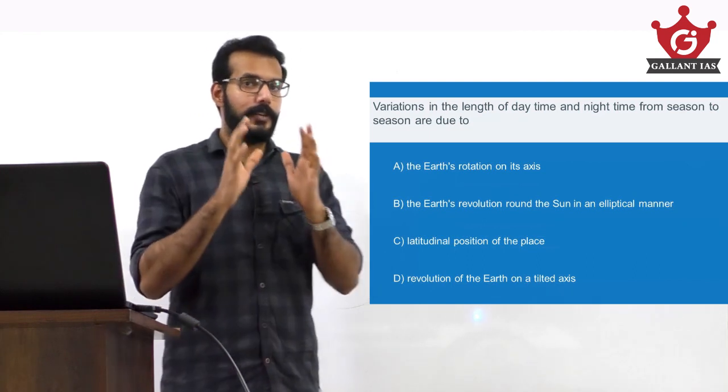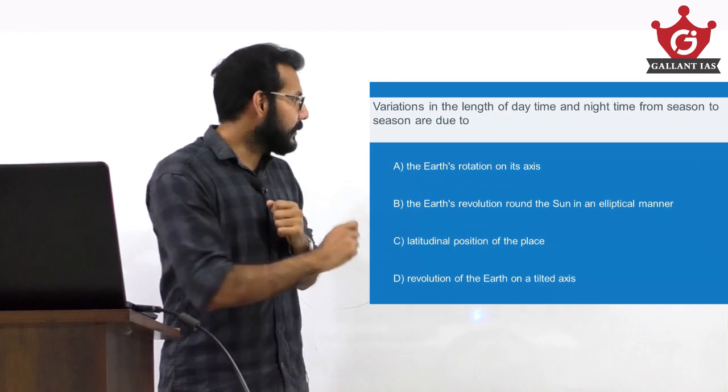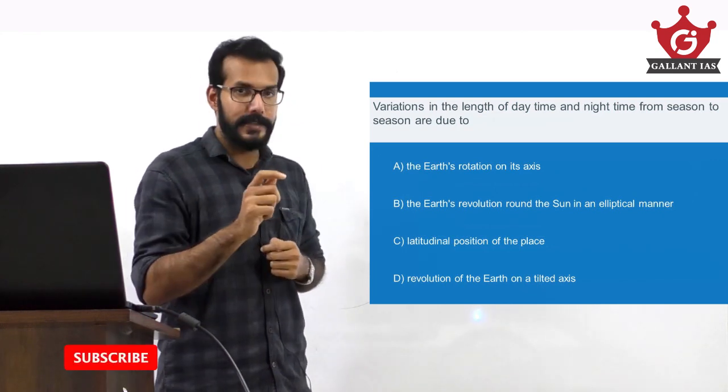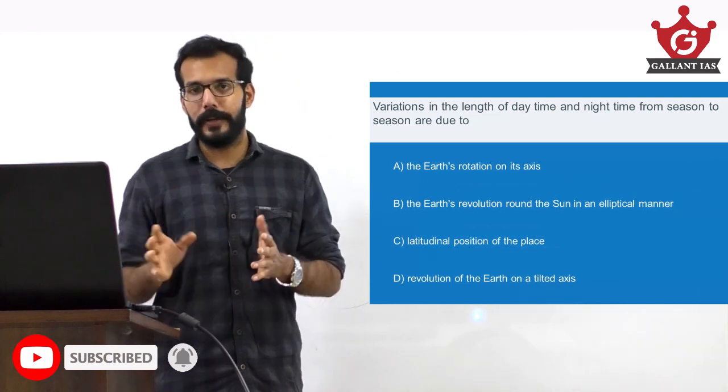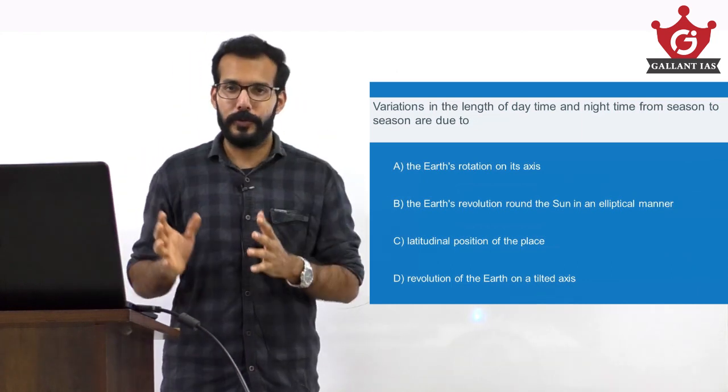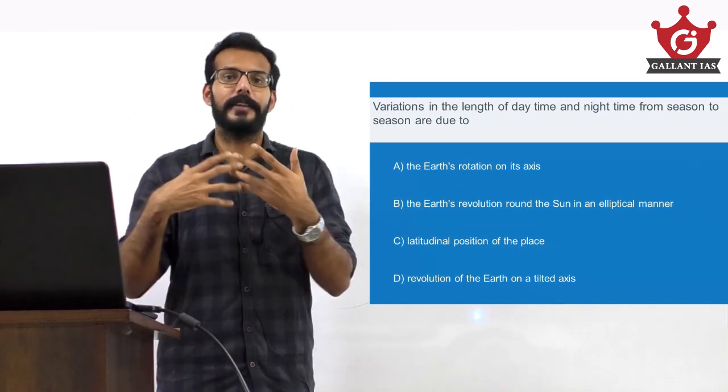Now let's read the question - that is the first step. The question is: variations in the length of daytime and nighttime from season to season are due to. This is a simple straightforward question I'm sure you all know the answer, but let's assume this is a very tough question.